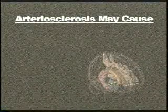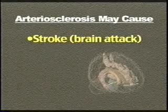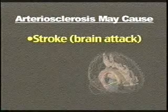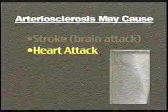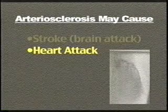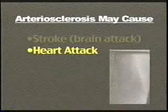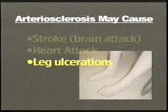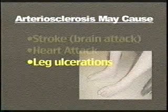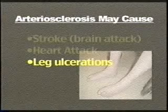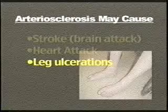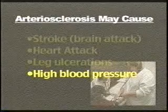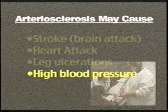When the vessels of the brain are affected, the risk is high for a person to have a stroke or CVA, also called cardiovascular accident, or brain attack. When vessels of the heart are affected, the person can sustain a myocardial infarction or heart attack. When the vessels of the leg are affected, the person may experience a cool skin temperature, they may have swelling, pain on walking, and also can develop leg ulcers. When the arteries throughout the body are affected, high blood pressure may occur, also called hypertension.